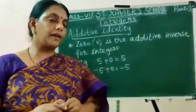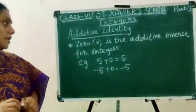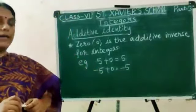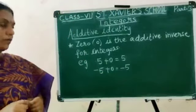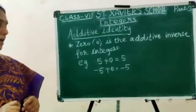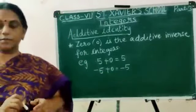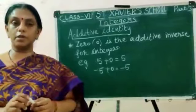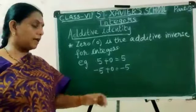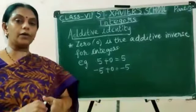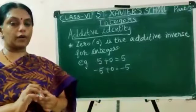Additive identity: 0 is the additive identity for integers. Example: 5 plus 0 equals 5, and minus 5 plus 0 equals minus 5.